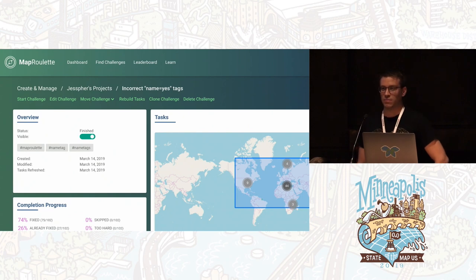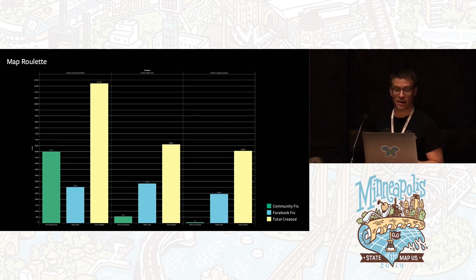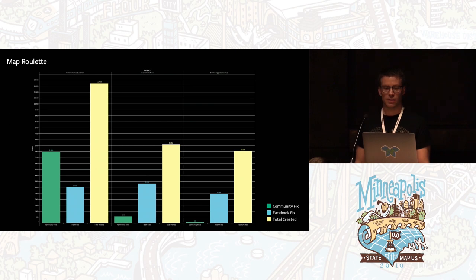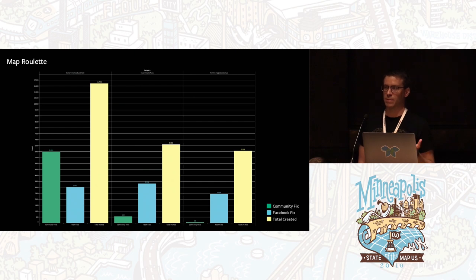If you've been on MapRoulette in the last six months or so, you may have seen some of these incorrect name challenges we've created. We found that the community really engages too — if you provide the information, people want to go fix the map themselves. In the far left bucket, the community did about 6,000 fixes themselves just because they knew it was there and wanted to make the map a better place.